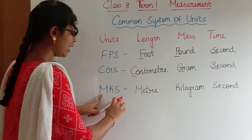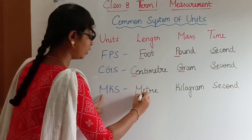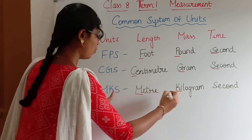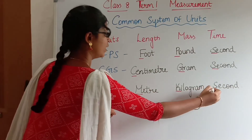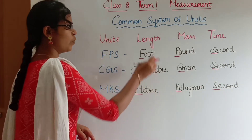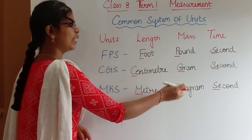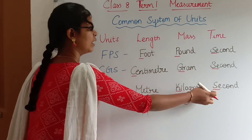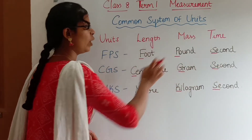In MKS, M stands for meter, K stands for kilogram, and S stands for second. Meter is for length, kilogram is for mass, and second is for time.